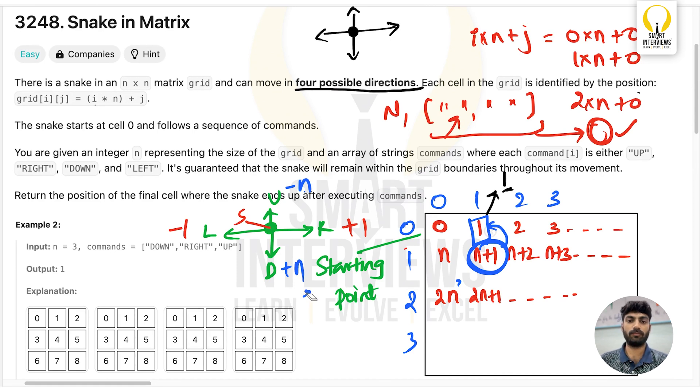So we'll start from zero, which is the starting position, and iterate through the command array. For each command, if it's RIGHT, add +1. If it's LEFT, subtract 1. If it's UP, add -n. If it's DOWN, add +n. That's it. Let's move on to code.